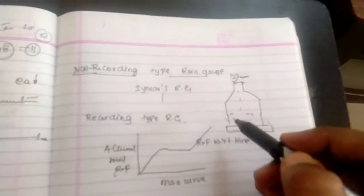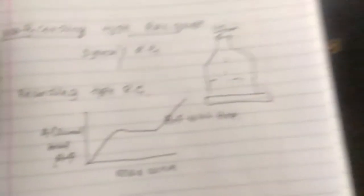With respect to depth, we find out the rainfall in this area. Recording type rain gauges directly record rainfall according to different types of rain gauges.